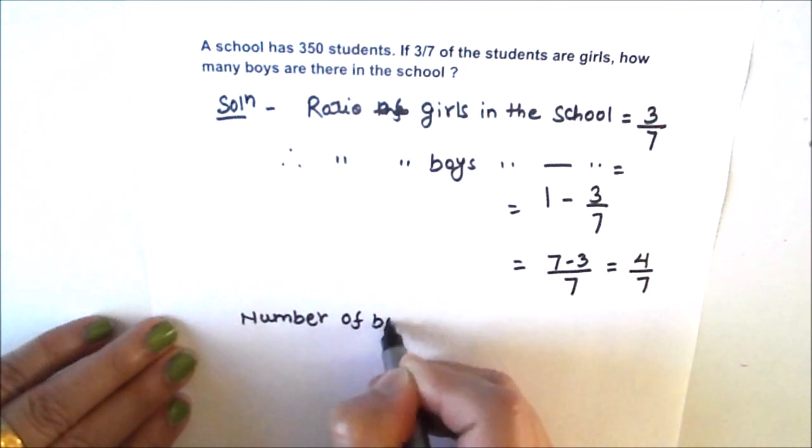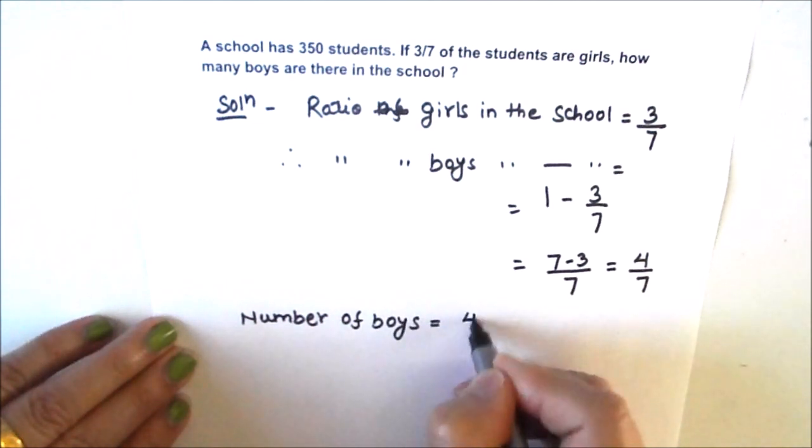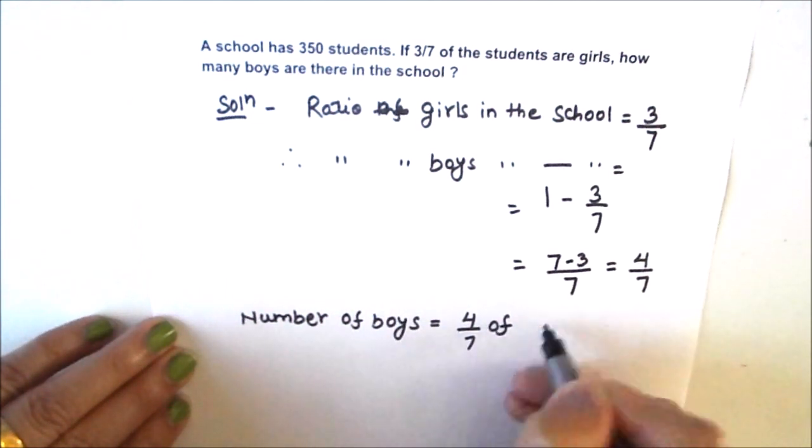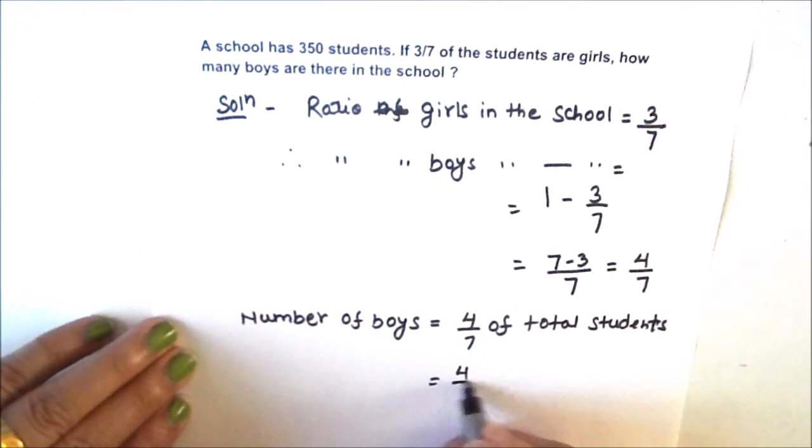So number of boys will be 4 seventh of total students in the school, and total students are given as 350.